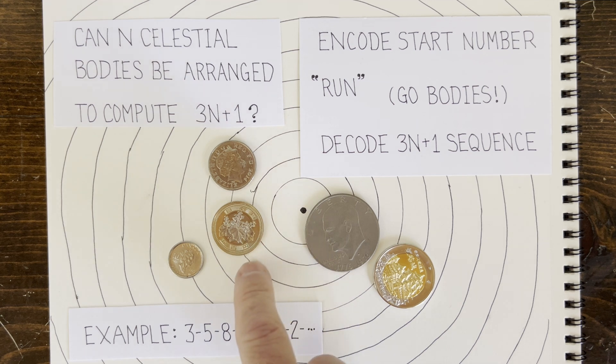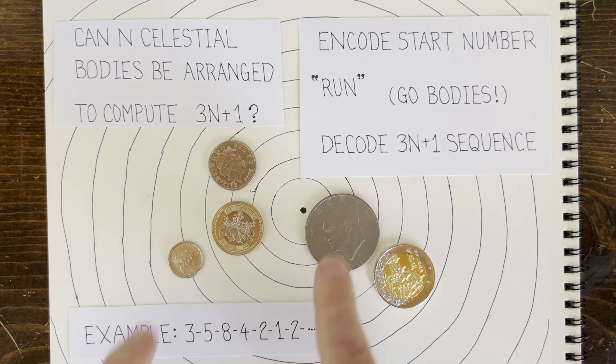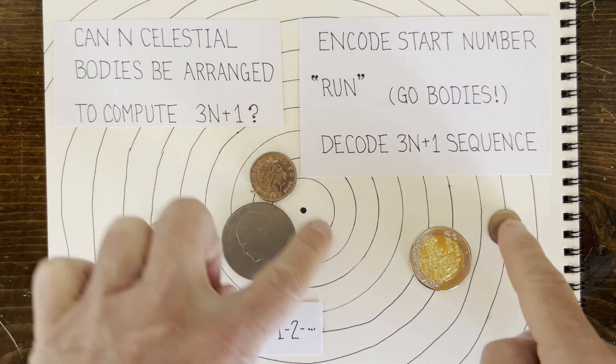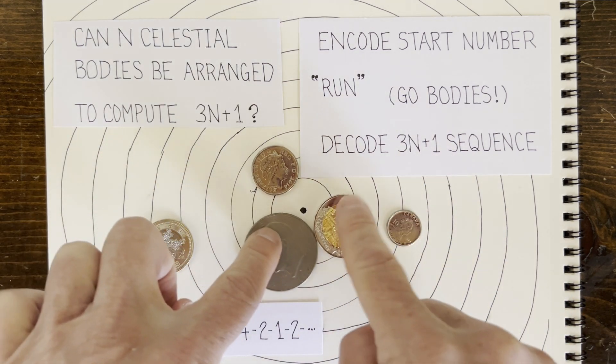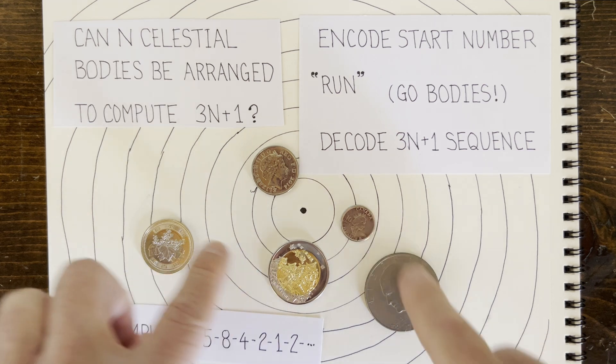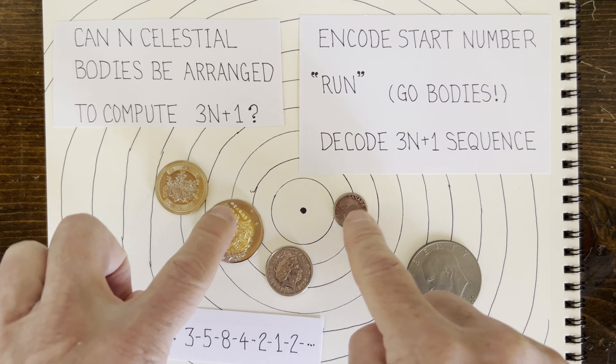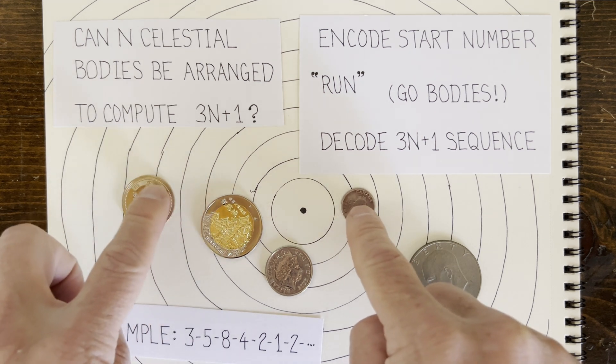Now the smallest body is 5 units away. After another year, it's 8 units away. Then 4 units away. Then 2 units away. Then 1. And after that, the orbits stabilize, and the little guy goes from 1 to 2 and back.